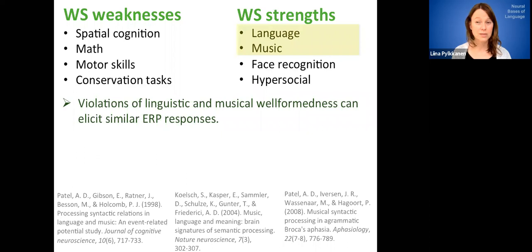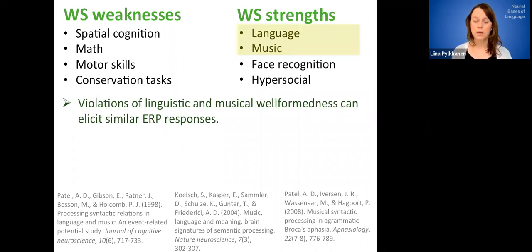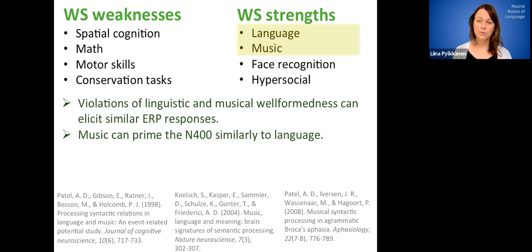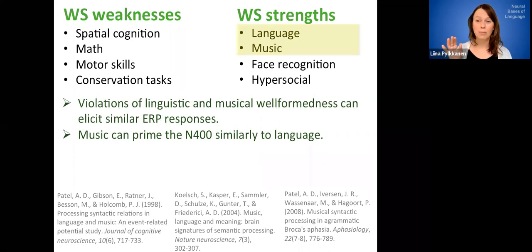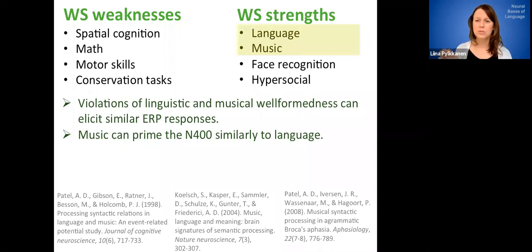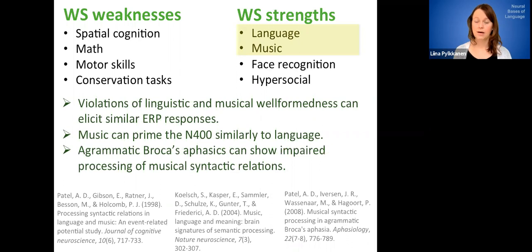So for example, it's been shown that violations of linguistic and musical well-formedness can elicit similar ERP responses. So we talked about the EEG literature using violation paradigms, and so that's kind of part of that literature. It's also been shown that music can prime the M400 similarly to language. So if you have a target stimulus that is a linguistic stimulus, you can prime it very similarly using a musical excerpt versus say an auditory sentence. Also, it's been shown that agrammatic Broca's aphasics can show impaired processing of musical syntax as well. So there's some cases where the kind of syntactic processing of language and syntactic processing of music go together.